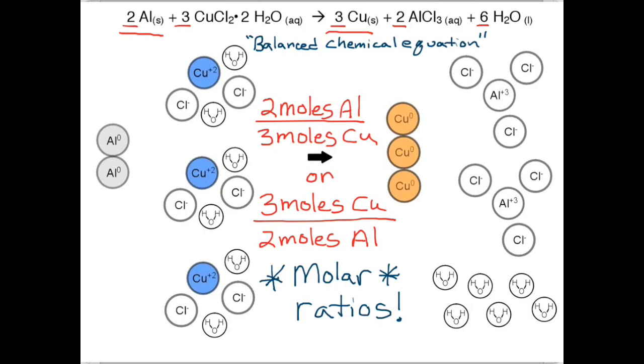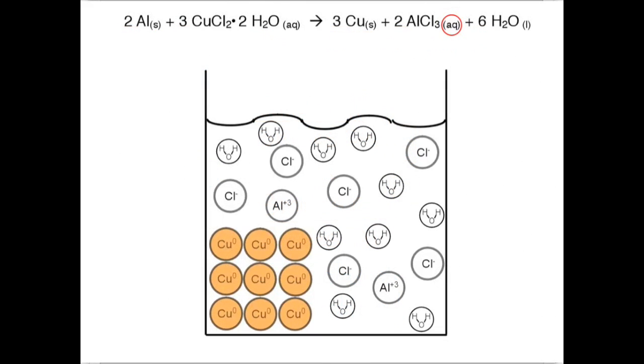And one other thing. Notice that the aluminum chloride produced has an aqueous designation. The chloride ions were already dissolved, but now the aluminum metal is also dissolved, and note that aluminum ions in solution have no color.